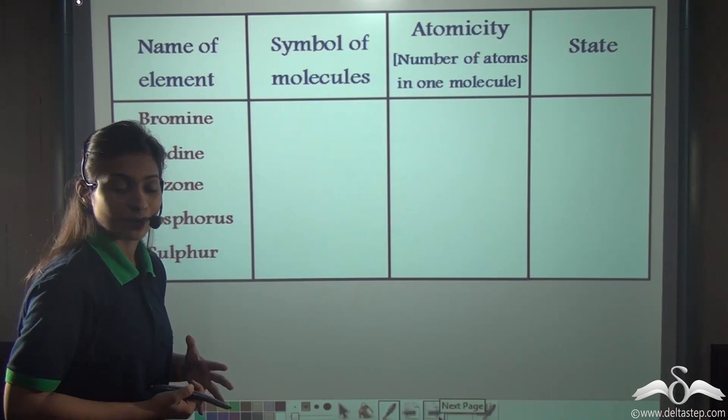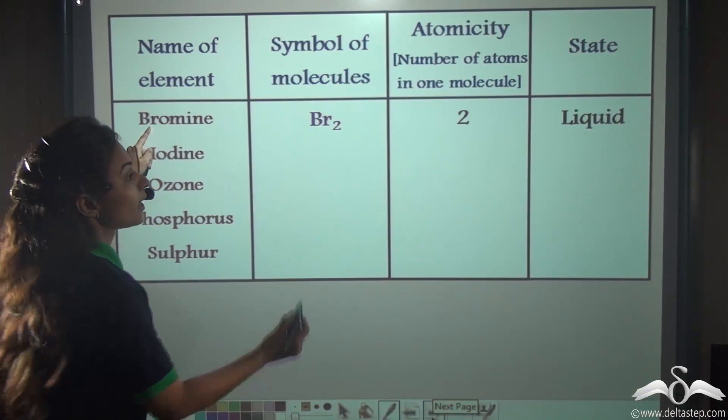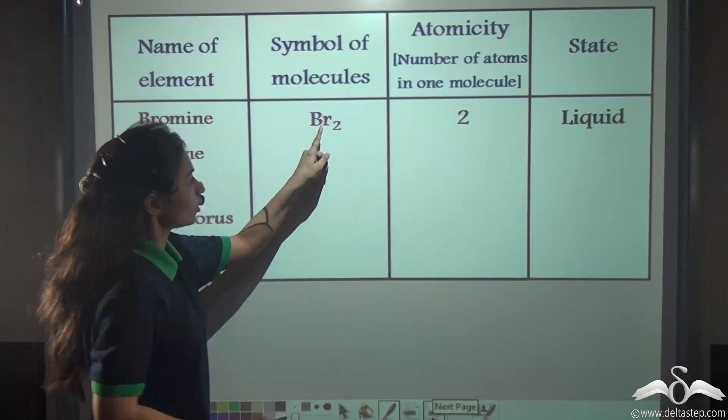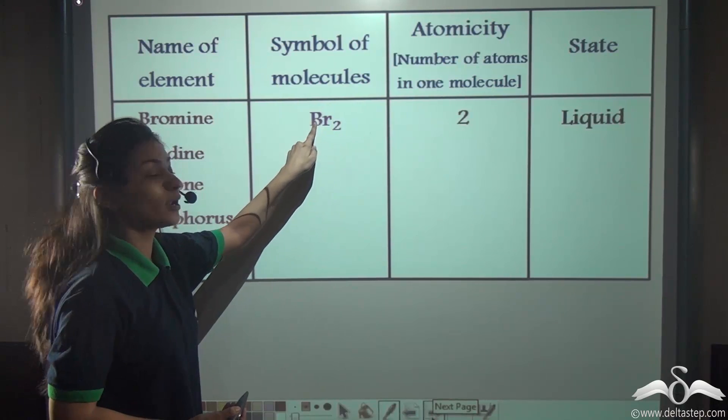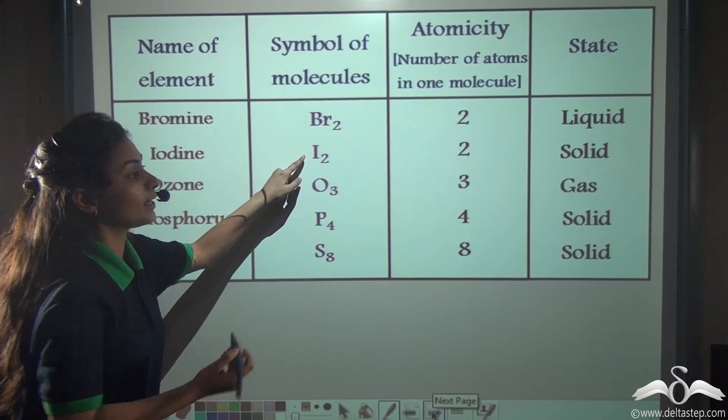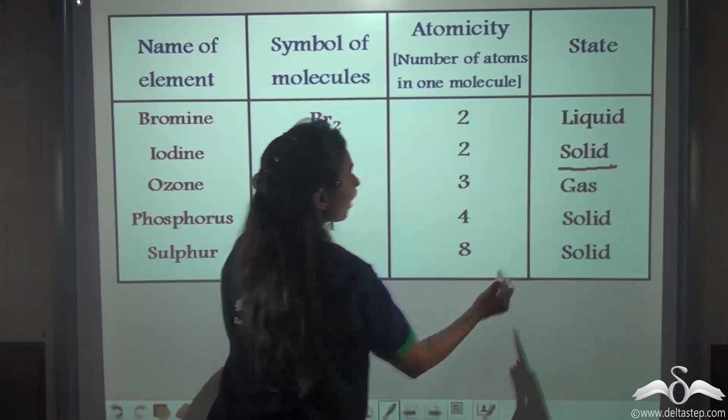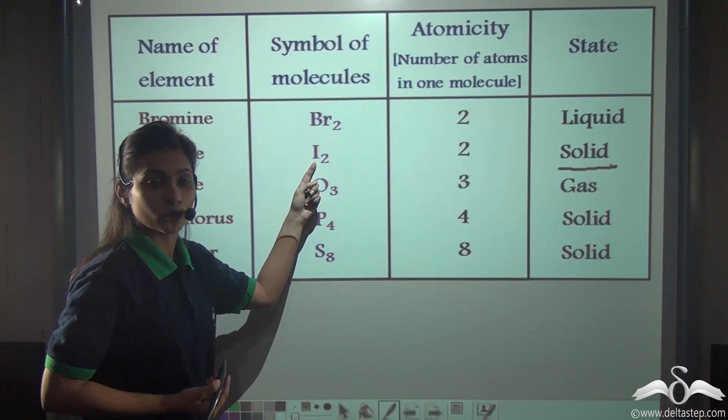Now we will look at some more elements. Look, Bromine, again it is a liquid, but here also two atoms of Bromine combine together to form one molecule of Bromine. Similarly with Iodine, it is a solid. Again, two atoms of Iodine combine together to form one molecule of Iodine.